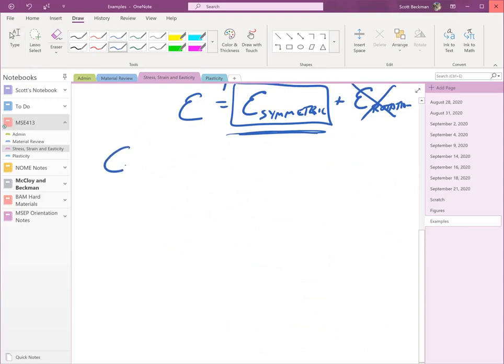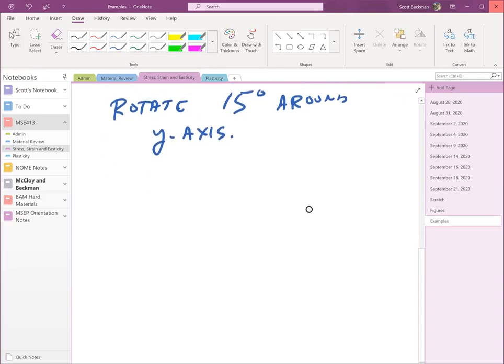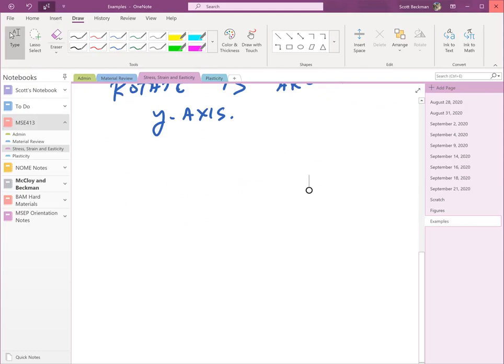So I just wanted to make certain that you understood that there was a difference there. And again, you can go and you can use equation 2.11 or you can take the equations from my notes. They're the same, except for the way that they express the shear strains. Okay, so if you're given your stresses and strain tensors, rotate 15 degrees around the y axis. So how do we do that?